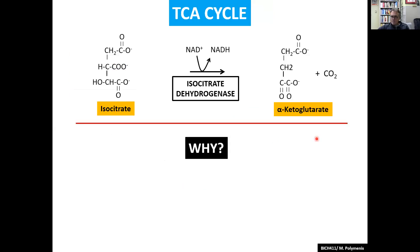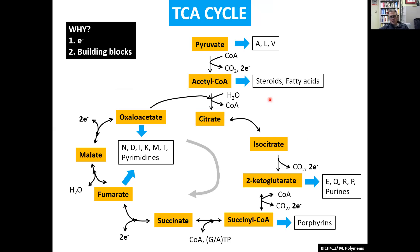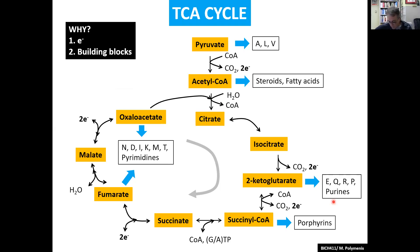Why does this reaction happen? For the same two reasons the whole TCA cycle exists: to provide electrons in the form of NADH, and of course, building blocks. Alpha-ketoglutarate — or 2-ketoglutarate — is a major building block, and a very unusual one at five carbons. It's the only five-carbon unit in the whole cycle. It's used very heavily to make amino acids and also in the generation of nucleotides, especially the purine base on nucleotides.